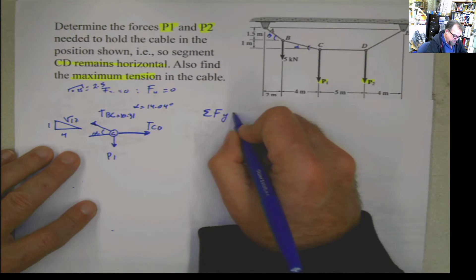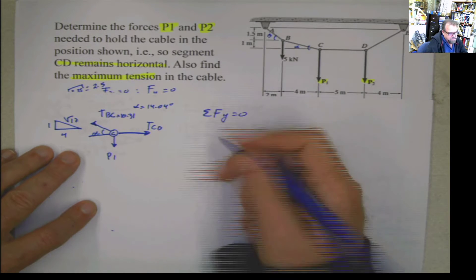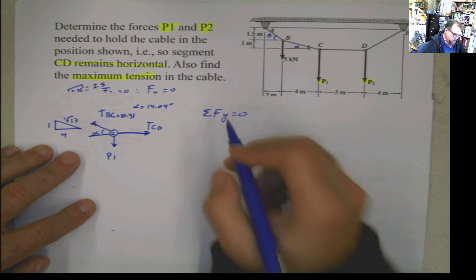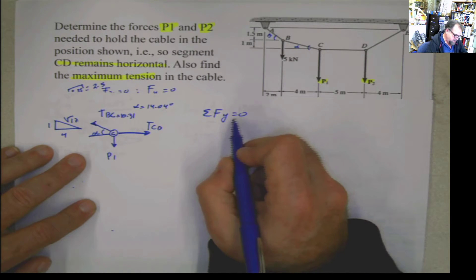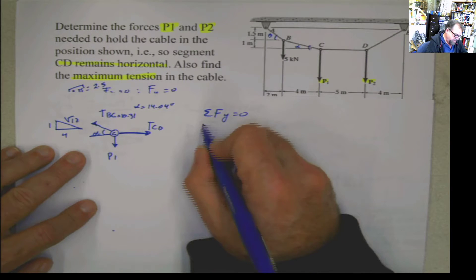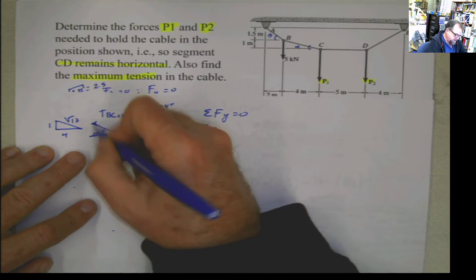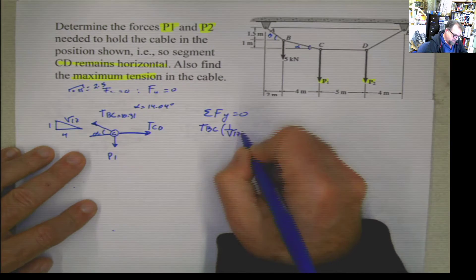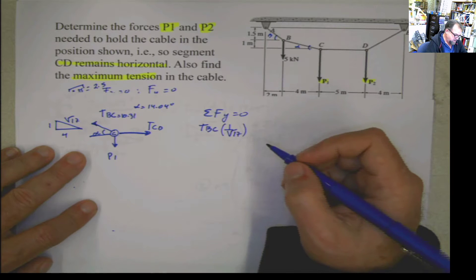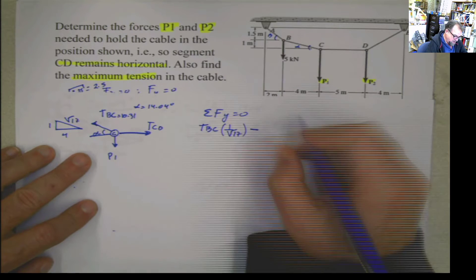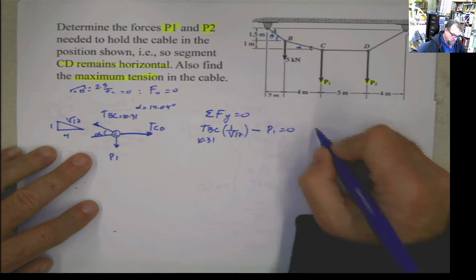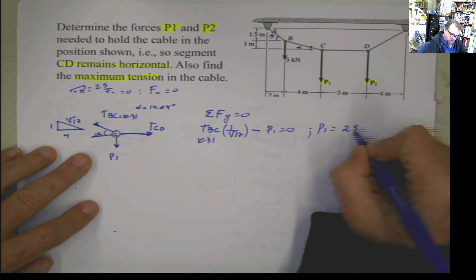So if I do summation of forces in y equals 0, we will have TBC multiplied by sine alpha — or 1 divided by square root of 17, same thing — minus P1 equals 0. And remember TBC is 10.31, calculated before. So from here I can calculate P1, which is 2.5 kilonewtons.